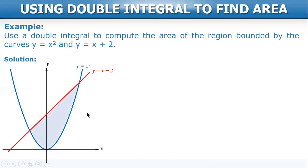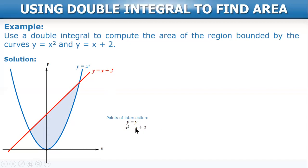This is the bounded region. First let's get the points of intersection because that will serve as our limits. We equate the two expressions: x² = x + 2, transpose all terms to one side, and factor. We get x = 2 and x = negative 1. When x = 2, y = 4, and when x = negative 1, y = positive 1.